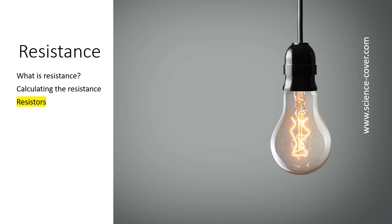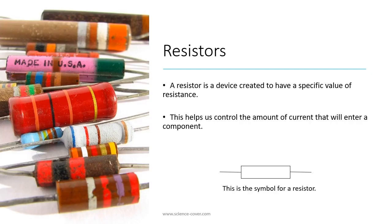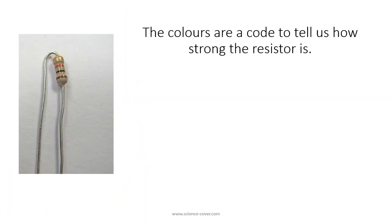Let's look at resistors and how we use them in circuits. A resistor is a device created to have a specific amount of resistance. This helps us to control the amount of current that will enter a component. The symbol for the resistor is shown on screen. The outside of a resistor has coloured bands which tell us how strong that particular resistor will be.